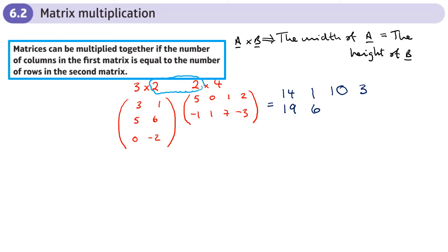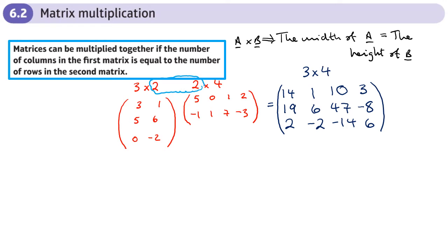Next: 5 times 1 plus 6 times 7 = 5 plus 42 = 47. Then 5 times 2 plus 6 times negative 3 = 10 minus 18 = negative 8. Bottom row: 0 times 5 plus 2 = 2; next 0 times 0 minus 2 = negative 2; then negative 14; and the last one is 6. That's the complete answer matrix, which is 3 in height and 4 in width — the two outer numbers.